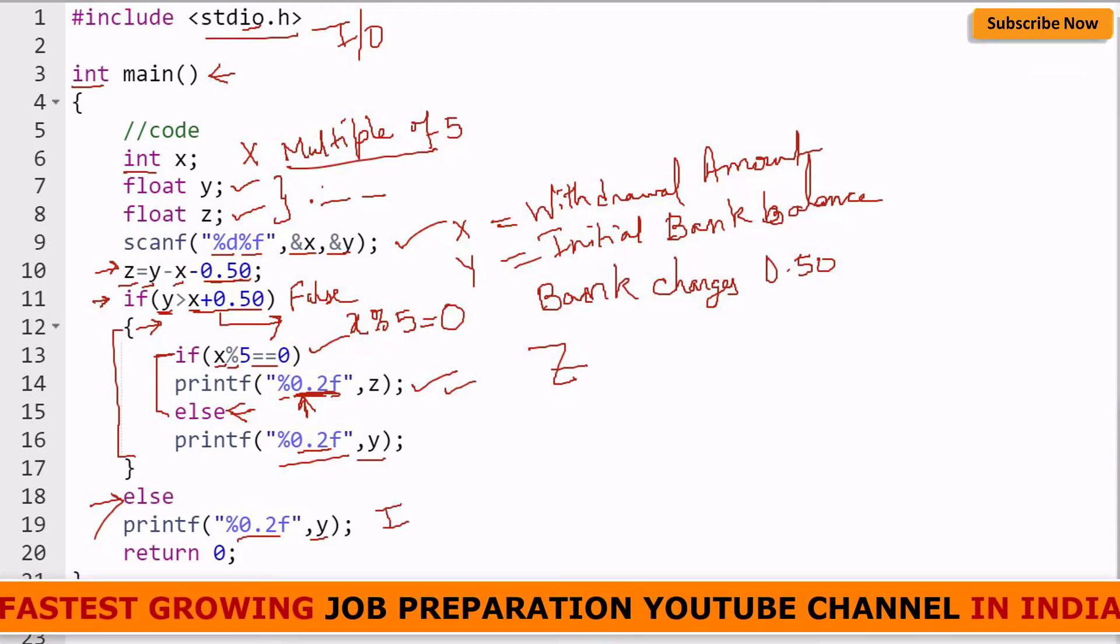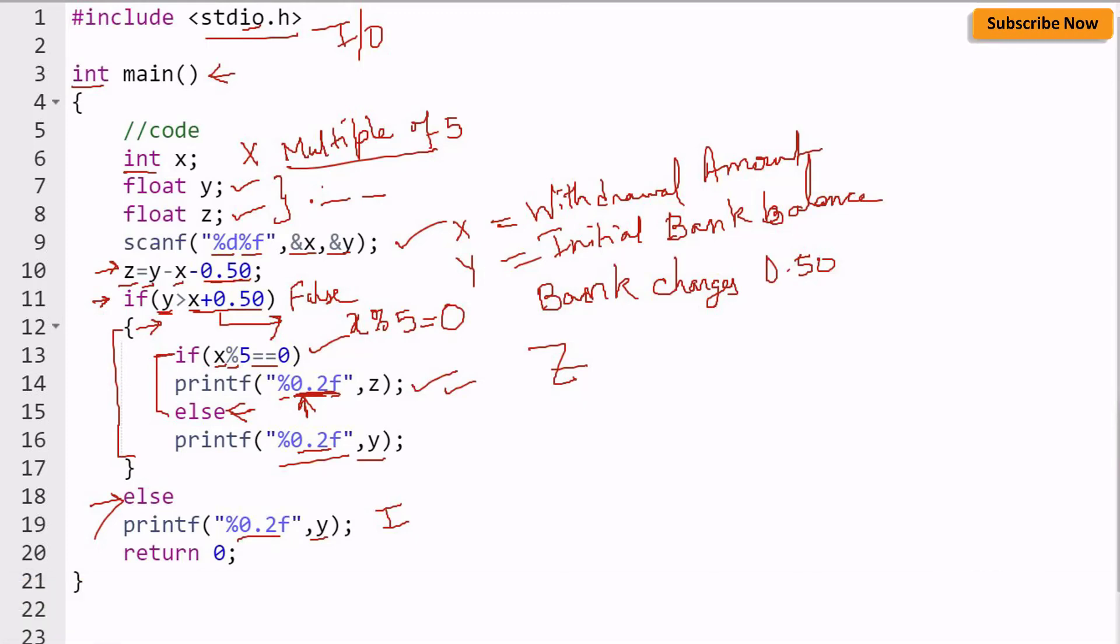This was the initial bank balance, again with 0.2 precision. The last line of the code is return 0 because we have used integer return type for main, so we have to return one value and that should be 0. Here our program ends. I hope you have understood the C language code properly. If not, please get back to us.